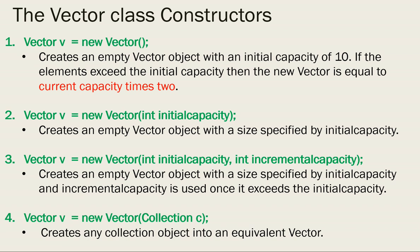So this is how it keeps on increasing. After adding 20 elements, if I want to add the 21st element, it will do two times the current capacity, that is two times 20, so the capacity will become 40. It basically doubles. As you can see here, it creates an empty vector object with an initial capacity of 10, and if the elements exceed the initial capacity, then the new capacity equals current capacity times two. This is a very important point.